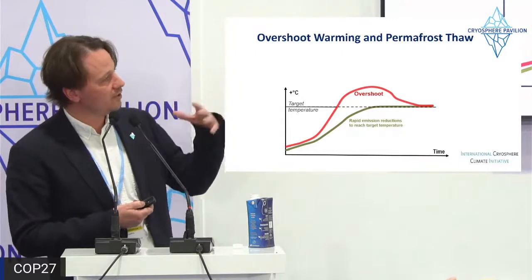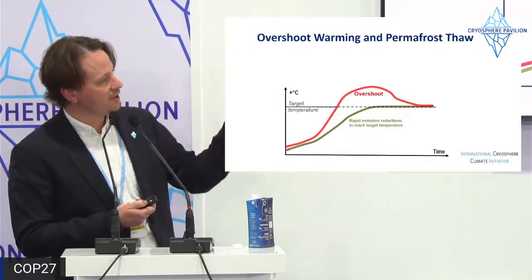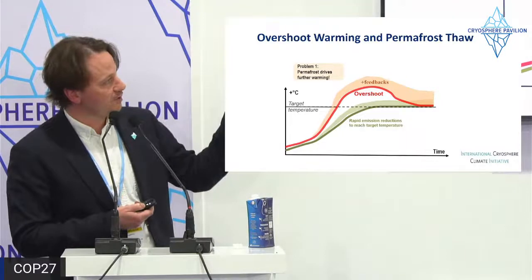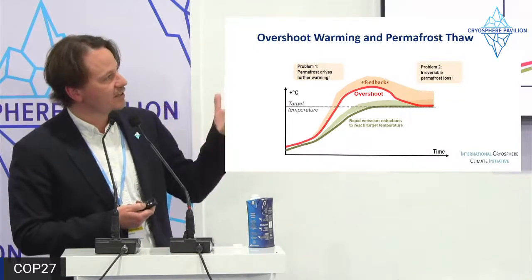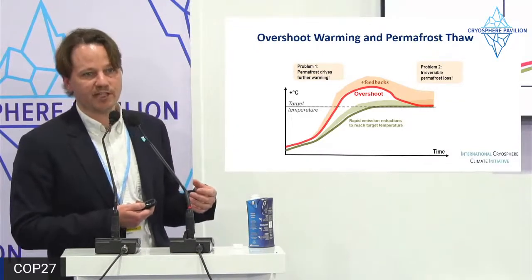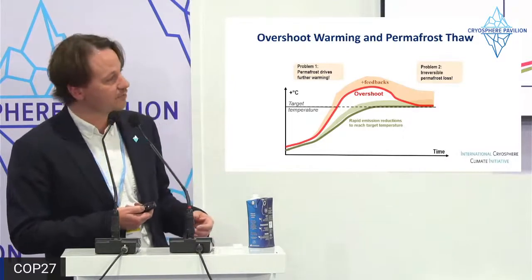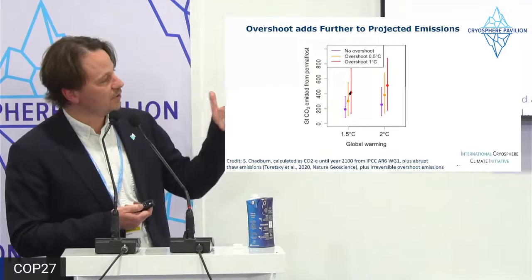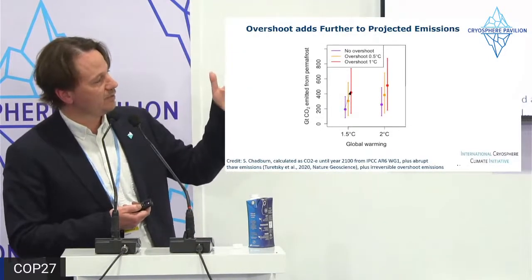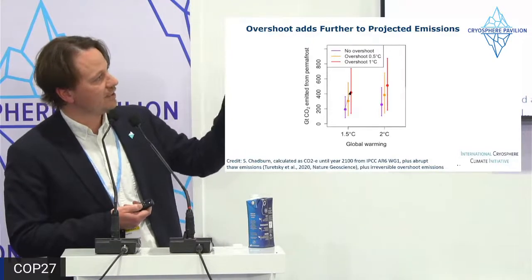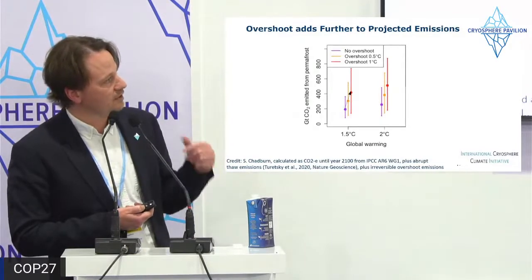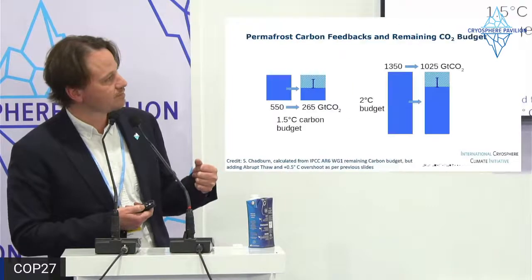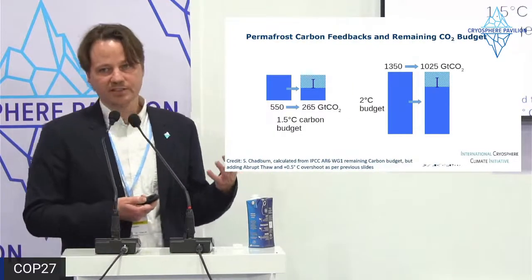Another concern is overshoot warming scenarios: if we shoot past our target temperature instead of going directly to it, the feedbacks from permafrost will drive even further warming — and a lot of this permafrost loss is irreversible at human timescales, continuing to emit CO2 for several centuries. Overshooting the 1.5°C target with half a degree or one degree gives significant added CO2 emissions from the permafrost on top of no-overshoot scenarios.